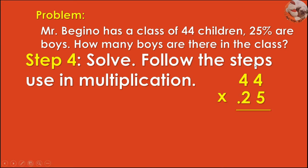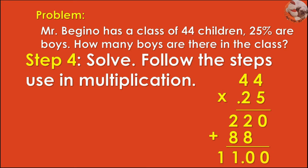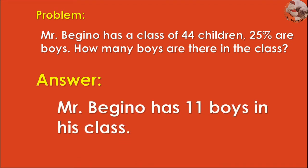First, multiply 44 and 5 — so 44 times 5 is 220. Then multiply 44 by 2 — so 44 times 2 is 88. Add the partial products, then consider moving the decimal place two places. So you have 11. Therefore, Mr. Behino has 11 boys in his class.